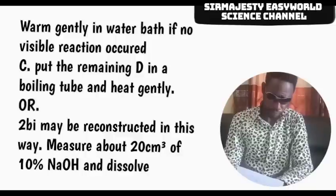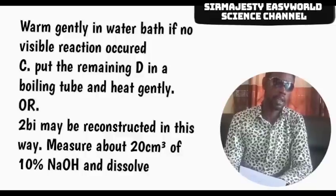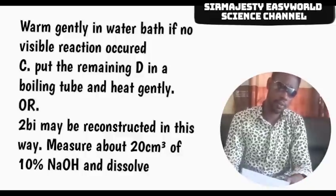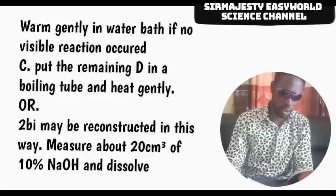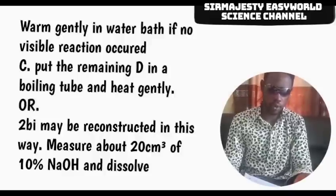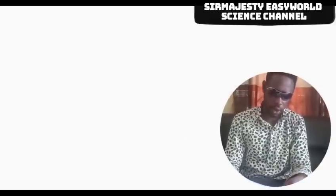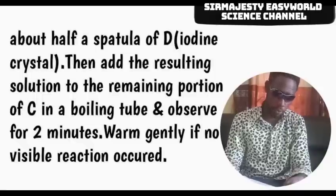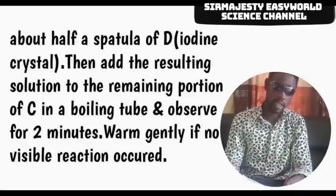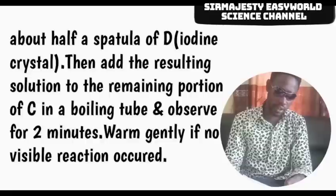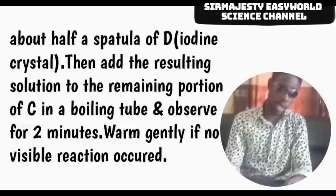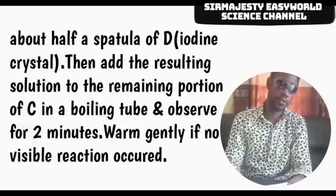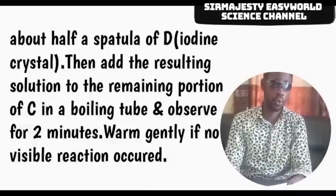For question 2C, put the remaining part of D in a boiling tube and heat over a Bunsen burner — that is iodine crystal. Question 2BI may be reconstructed as follows: measure out about 20 ml of 10% sodium dioxide and dissolve about half a spatula of specimen D — iodine crystal. Add the resulting solution to the remaining portion of C in a boiling tube and observe for about 2 minutes. If no visible reaction occurs, warm gently in a warm water bath.